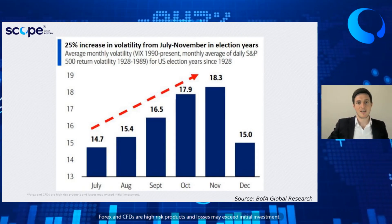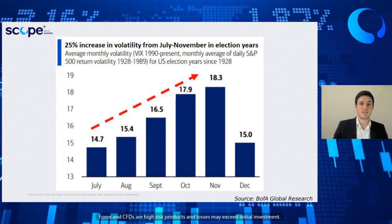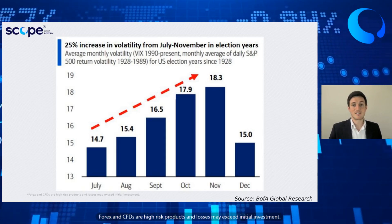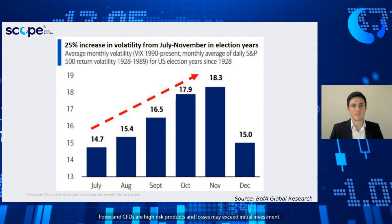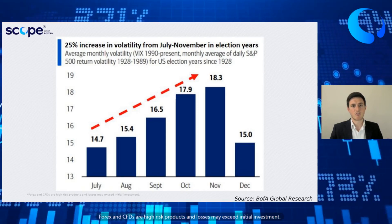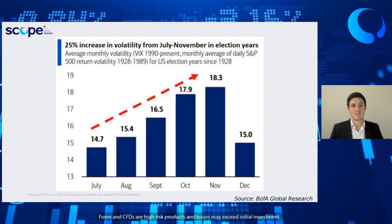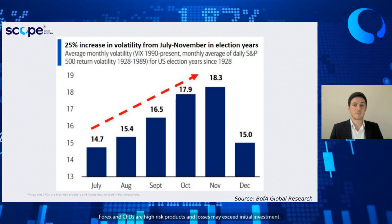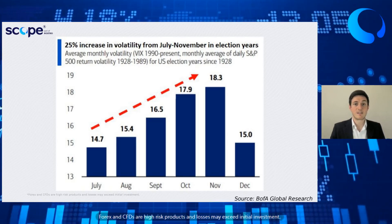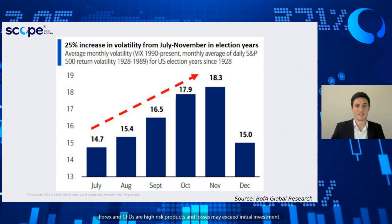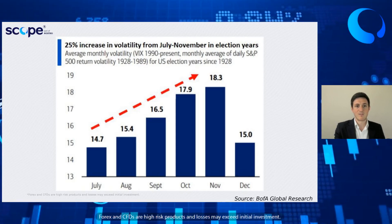When we've seen previous elections, there's been a significant pickup in volatility as we head into the event. When we see major market events — an election, a Brexit vote — you'll generally see brokers across the board trying to mitigate against the volatility. You can expect things like potentially higher margins and higher spreads across some assets. That is pretty typical for high volatility events. You can see that's exactly what has happened in the past in terms of volatility building up as we get into that November election.